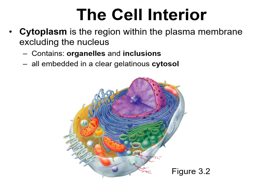If you recall, there are three major structures of the cell: the plasma membrane or cell membrane, the nucleus, and the cytoplasm, which is basically everything within the boundaries of the plasma membrane minus the nucleus. The cytoplasm is the region, and in the cytoplasm we have two structures — organelles and inclusions.